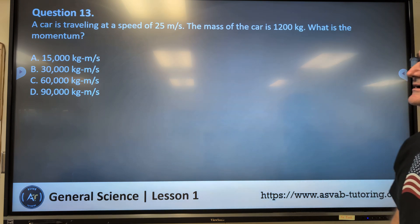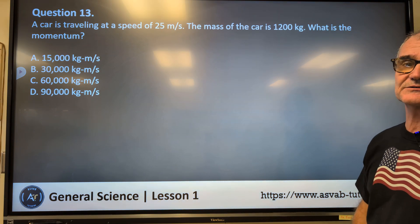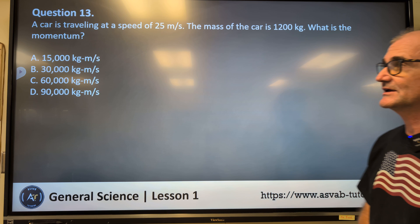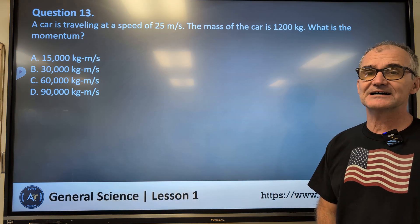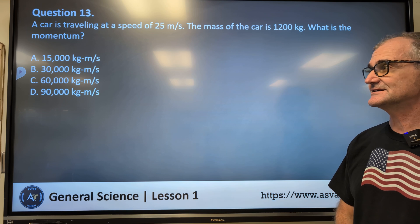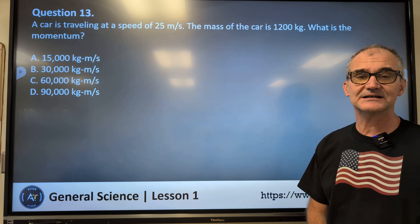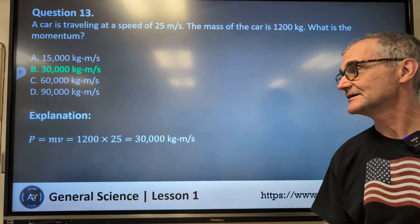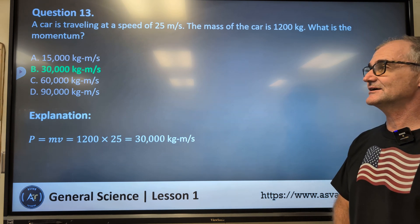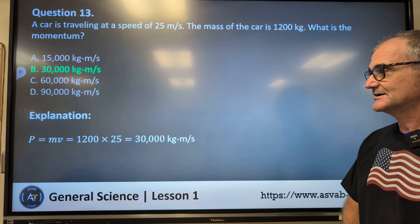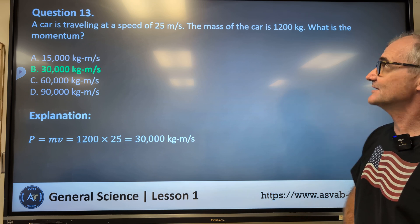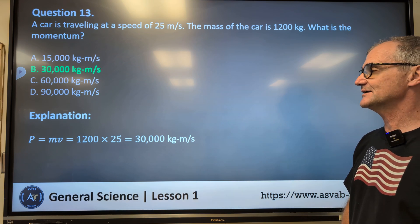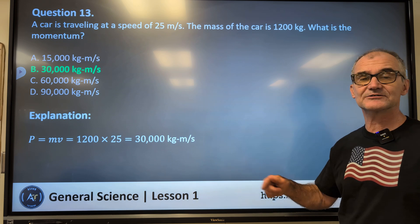Number 13. A car is traveling at a speed of 25 meters per second. The mass of the car is 1,200 kilograms. What is the momentum? A, 15,000. B, 30,000. C, 60,000. D, 90,000 kilogram meters per second. Pause the video, figure that one out. Correct answer, B, 30,000 kilogram meters per second. Mass times velocity. So you have the 1,200 kilograms of mass times the velocity in meters per second, 25. 1,200 times the 25 gives you 30,000 kilogram meters per second.